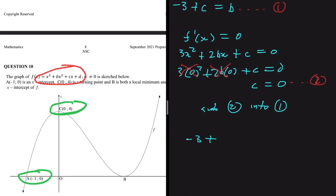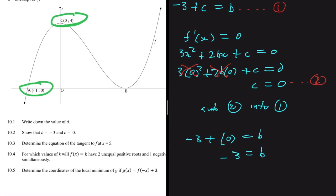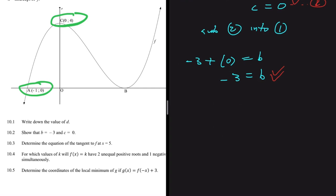Substituting equation 2 (c = 0) into equation 1: b = -3 + 0, so b = -3. That's exactly what we were asked to prove.